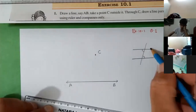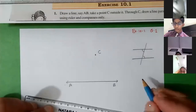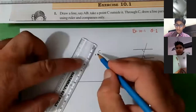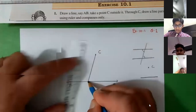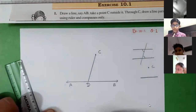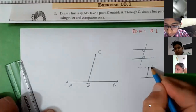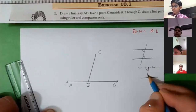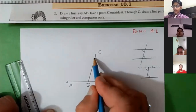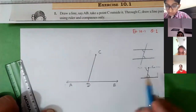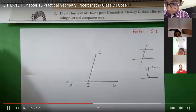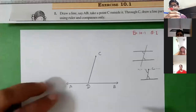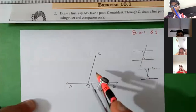When two alternate interior angles are equal, then only the line is parallel. So we have to draw parallel lines in such a way. We have taken line AB and a point C outside it. Now we will join point C with line AB — you can mark any point on AB; I have marked point D. So join CD. Now we have to draw alternate interior angles at D and C. All of you take a compass in your hand and take any radius.